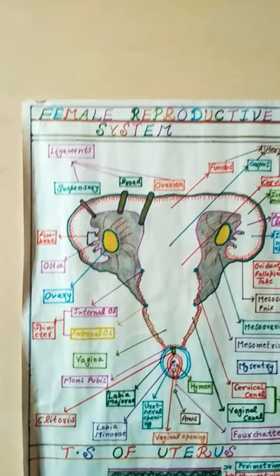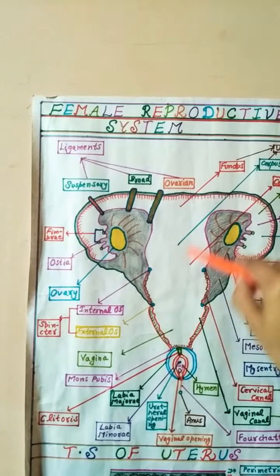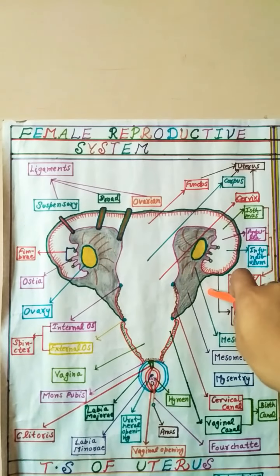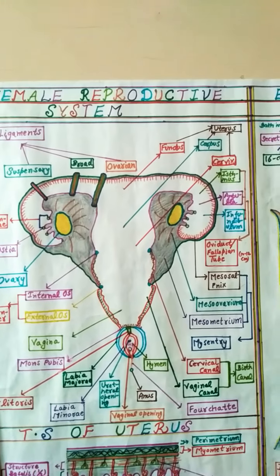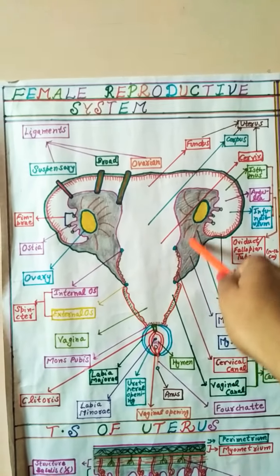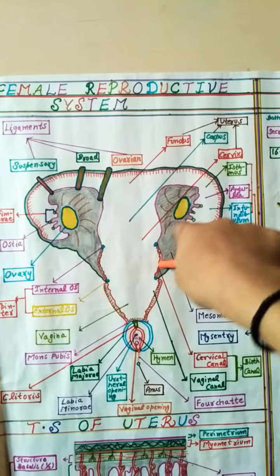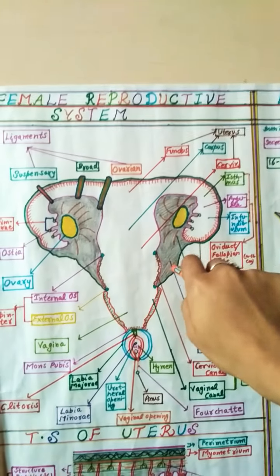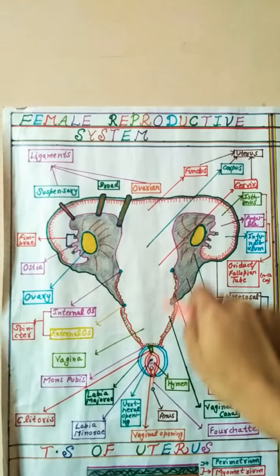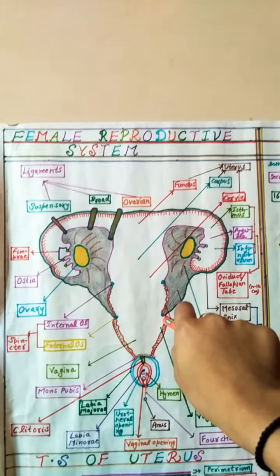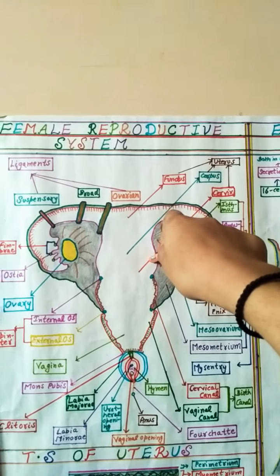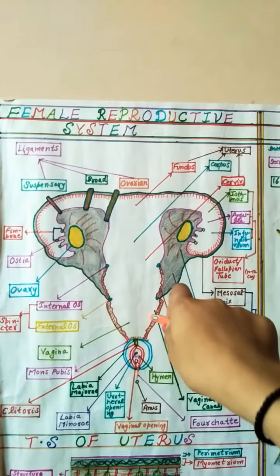The uterus is made up of three layers. The outer layer is the peritoneum, which is mesodermal in origin and a thin membranous layer. Inside that is the myometrium, also mesodermal in origin but thick in nature. The innermost layer is the endometrium, the inner lining of the uterus, which is glandular in nature. Two-thirds of the endometrium is the stratum functionalis, which is shed during the menstrual cycle.